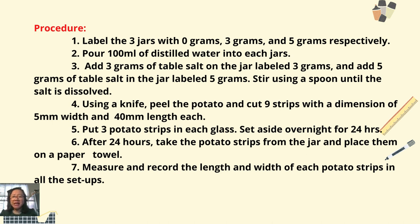Step 4: Using a knife, peel the potato and cut 9 strips with a dimension of 5 mm width and 40 mm length each. Step 5: Put 3 potato strips in each glass. Set aside overnight for 24 hours. Step 6: After 24 hours, take the potato strips from the jar and place them on a paper towel. Step 7: Measure and record the length and width of each potato strip in all the set-ups.